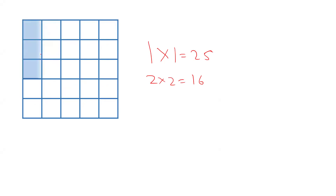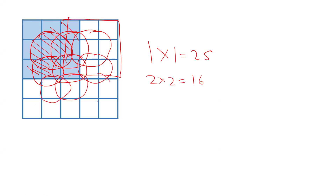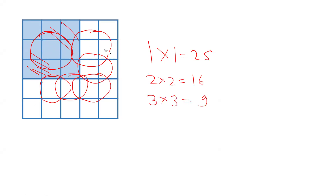Now talking about 3 by 3 squares. There are such squares — this type — and there is one, then the second one, then the third one. Continuing: 3, 4, 5, 6, 7, 8, and then 9. So 3 by 3 squares are 9. There are 9 such squares.